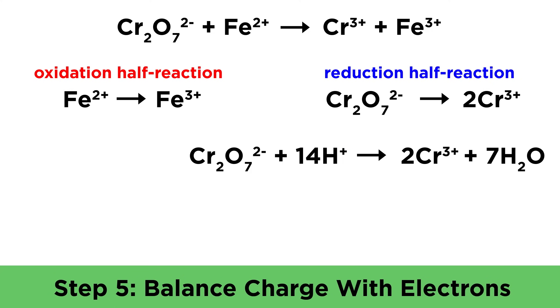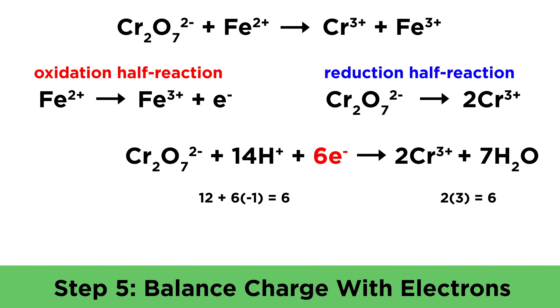Now we can balance the electrical charge for each half reaction by adding electrons. In the oxidation, in order for iron two plus to become iron three plus, it must lose an electron, so there must be one electron as a product here. For the reduction, it's a little trickier. We have two minus on the dichromate and fourteen H pluses for a total of twelve plus on the left. On the right, we have two chromium three ions for a total of six plus. In order to balance this, we will need six electrons on the left to bring the charge down to six plus and balance the charge.